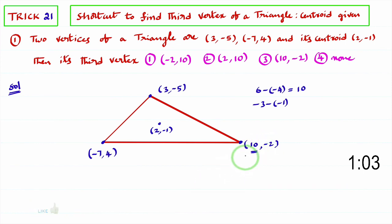So third vertex of the triangle is 10, minus 2. Third option is the right option. Little bit of practice is needed. In seconds, you can complete this problem.